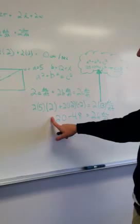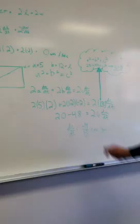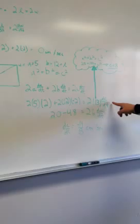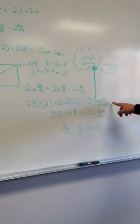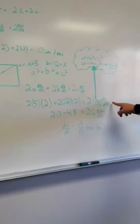Now you plug in the numbers: A is the width, so you plug in 5 with a rate of change of 2; B is the length, so you plug in 12 with a rate of change of negative 2; and C is 13. You do all the multiplication and end up with negative 28, and divide by 26 to isolate dc/dt, giving you negative 14 thirteenths centimeters per second.